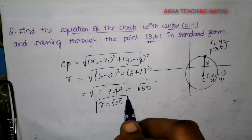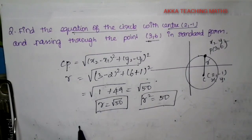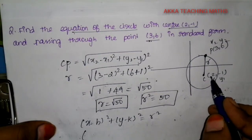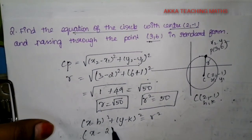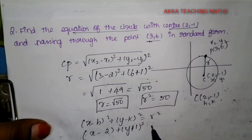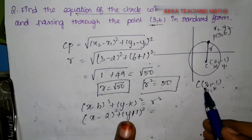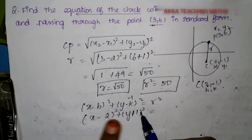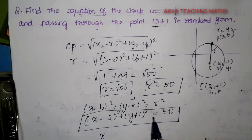Removing the square root and squaring both sides, R squared equals 50. Now let's apply the equation of circle formula: (x - h) squared plus (y - k) squared equals R squared. The center is (h, k) = (2, -1). So substituting: x minus 2, the whole square, plus y minus (-1) — minus into minus gives plus — so y plus 1, the whole square, equals R squared, which is 50.